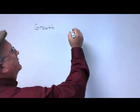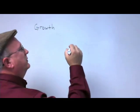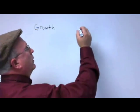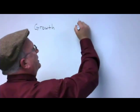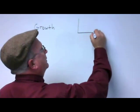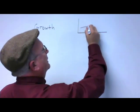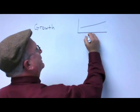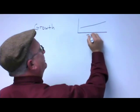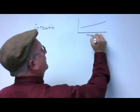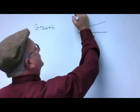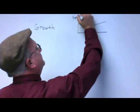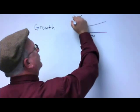If I were to graph growth in terms of server workload over time, the bottom axis would be time and the vertical axis would be server workload, and it would show a steady upward trend.